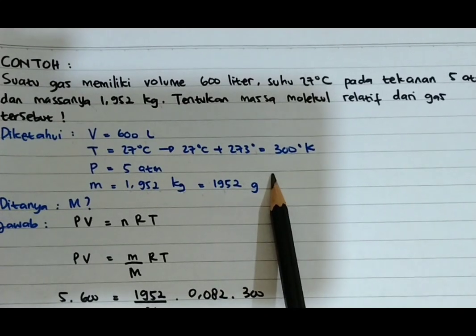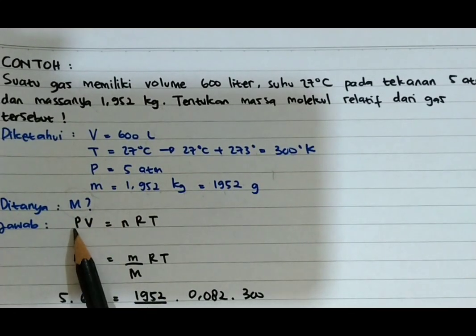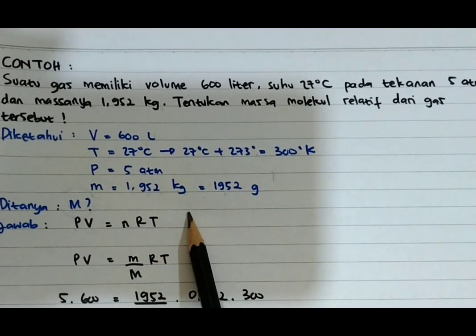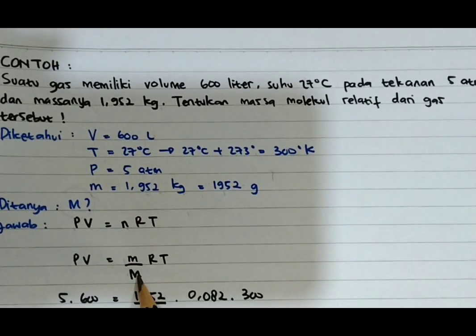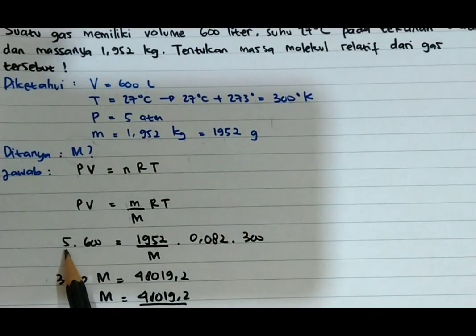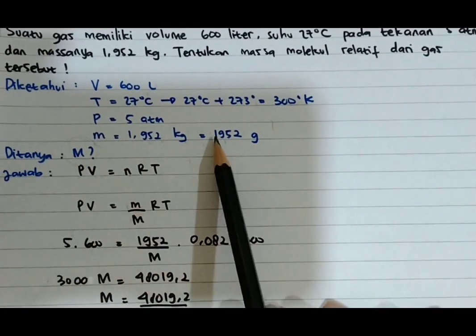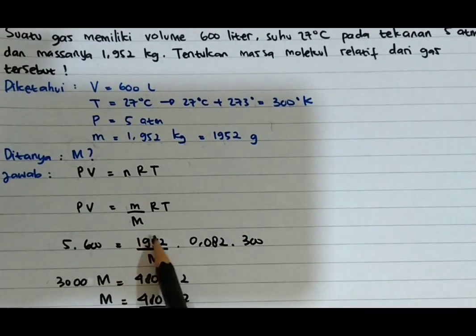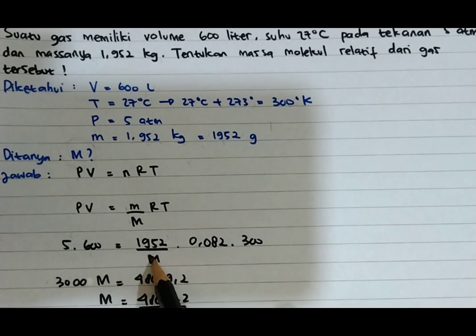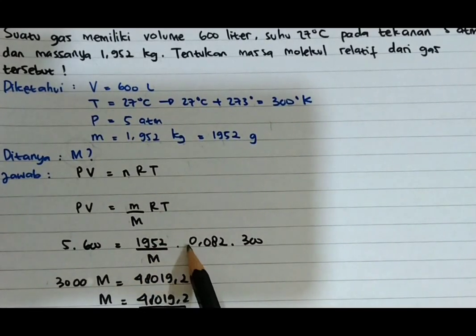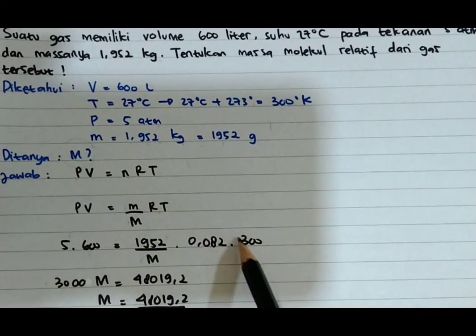Yang ditanya adalah massa molekul relatif. Kita gunakan PV sama dengan NRT, tetapi kita tahu bahwa N merupakan massa dibagi massa molekul relatif. Kita masukkan: P = 5, V = 600, massa = 1952, massa molekul relatif yang ditanya belum kita ketahui, R kita gunakan 0,082 karena ada liter dan atmosfer, T = 300.